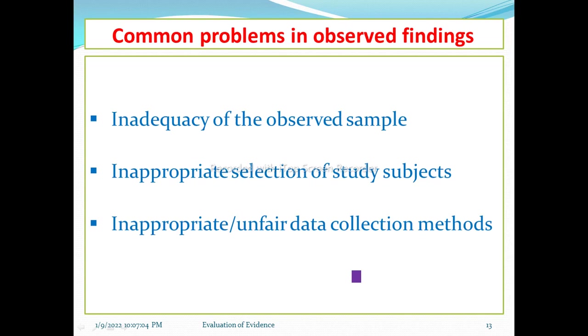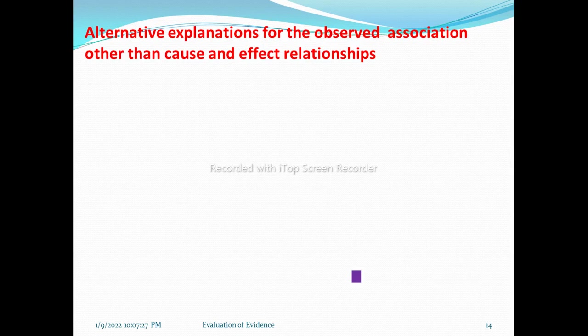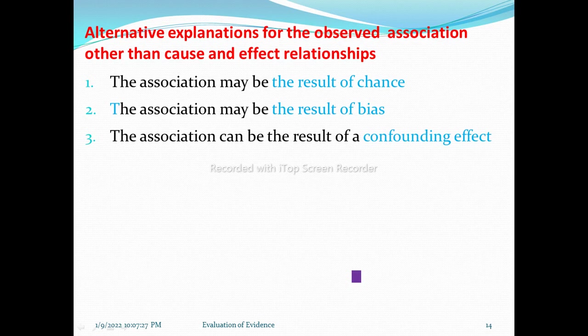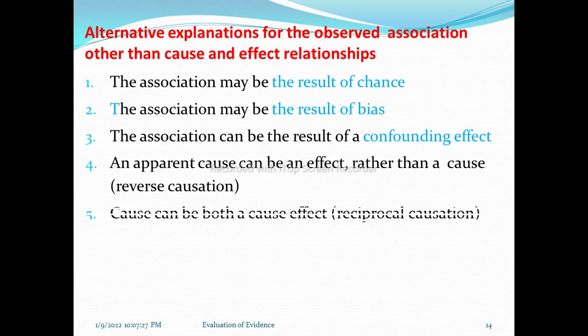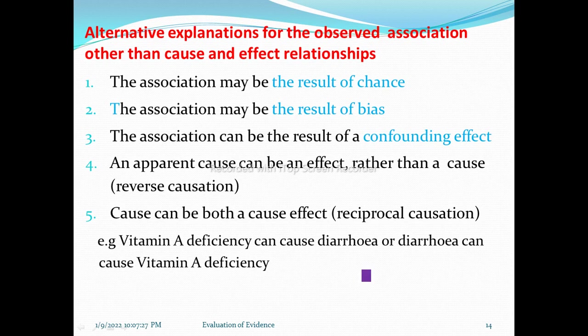Common problems in observed findings include: inadequacy of the observed sample, inappropriate selection of study subjects, and inappropriate data collection. Alternative explanations for observed associations include: the result of chance, selection or information bias, confounding effects, or reverse causation — where the apparent cause is actually an effect. For example, vitamin A deficiency can cause diarrhea, and diarrhea can cause vitamin A deficiency; this is known as reciprocal causation.